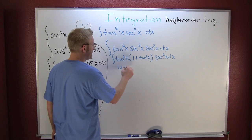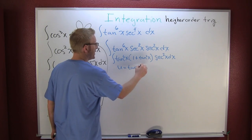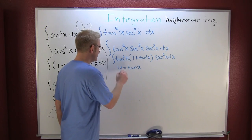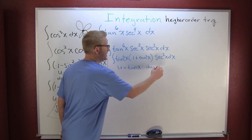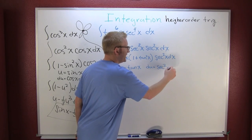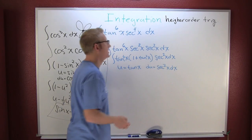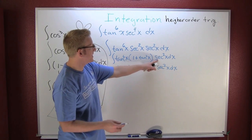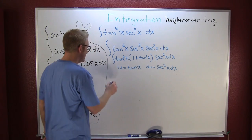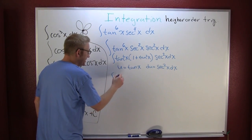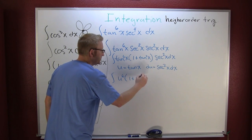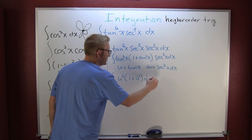Here I can make u equal the tangent of x. Then du is secant squared x dx. Lovely. I put that piece there, put this piece in both here and there. So now I'm looking at the integral of u to the sixth power times one plus u squared du.